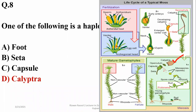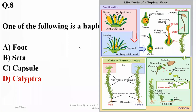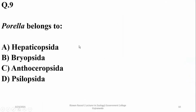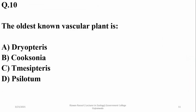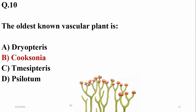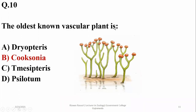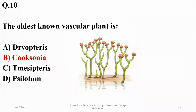Porella belongs to Hepaticopsida or liverworts. Regarding the oldest non-vascular plant, fossil records indicate that Cooksonia is the oldest non-vascular plant. Rhynia was the first plant discovered considered as a fossil of a vascular plant, but Cooksonia is considered even older.